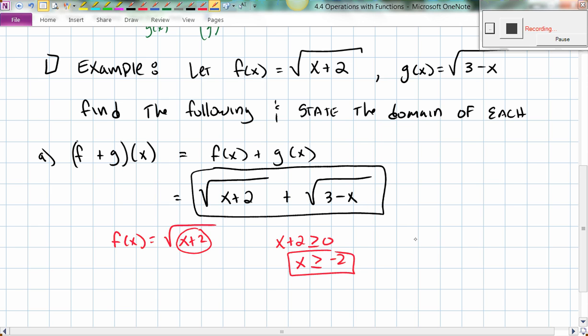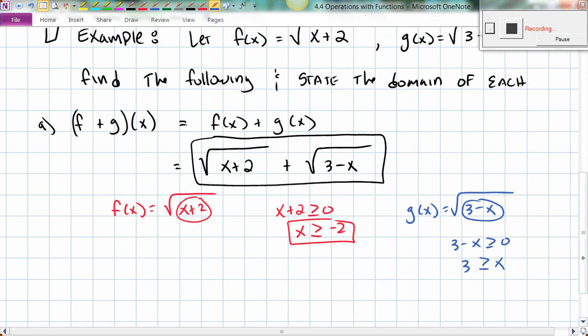Then I want to talk about g of x. Well, g of x is the square root of 3 minus x. So again, I want everything under the radical to be positive. So I'm going to have 3 minus x is greater than or equal to 0. So therefore, 3 must be bigger than or equal to x, which is logically equivalent to x being less than or equal to 3. So I want to keep that in mind.